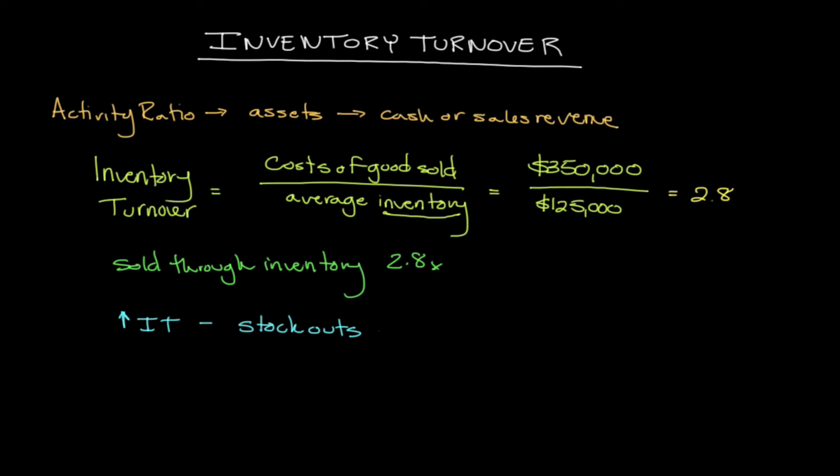A high inventory turnover ratio could also indicate that your prices are too low. If you're selling through inventory very quickly, you may have an opportunity to increase the sales price, which would logically decrease demand. However, if the margin between the selling price and acquisition cost is sufficient, you can overcome the loss in units sold and capture more value — benefiting from fewer customer contact points, fewer returns, and less administrative overhead.